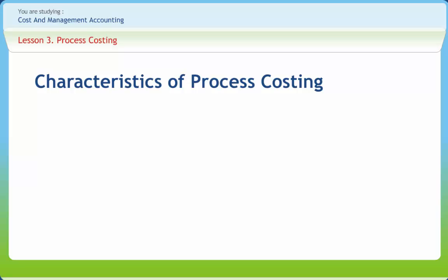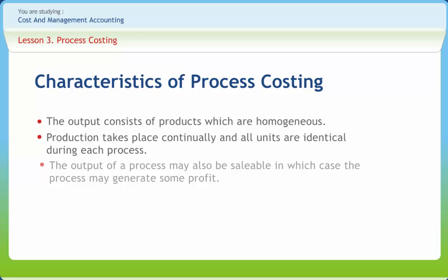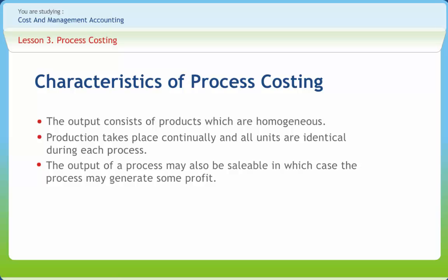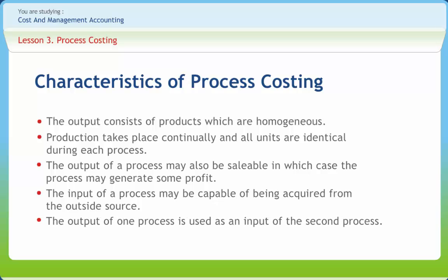The features of process costing are: the output consists of products which are homogeneous; production takes place continually and all units are identical during each process; the output of a process may also be saleable, in which case the process may generate some profit; and the input of a process may be capable of being acquired from an outside source. The output of one process is used as an input of the second process.